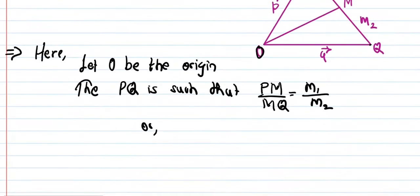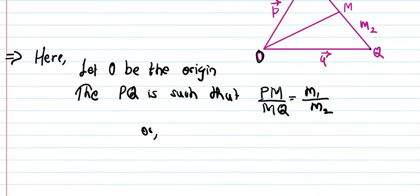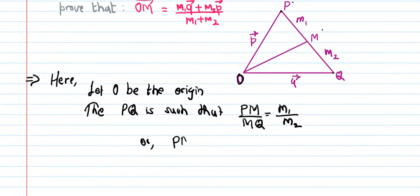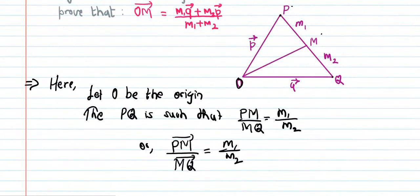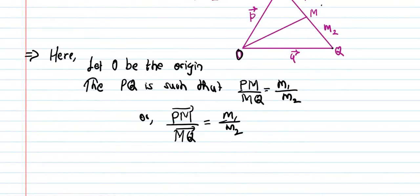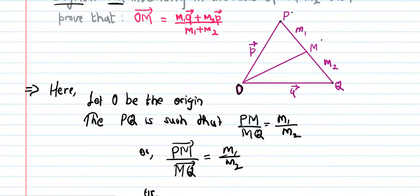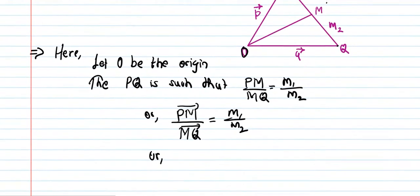PM vector upon MQ vector is equals to M1 is to M2. Now PM vector in terms of positional vectors: PM vector equals OM vector minus OP vector.